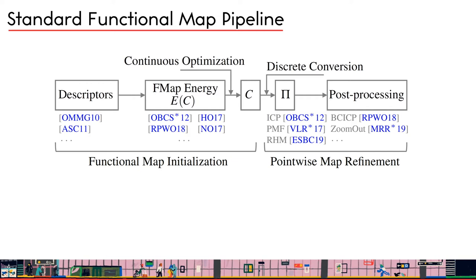Specifically, for a given shape pair, we first use existing methods to compute a few pairs of shape descriptors. We define some energy E of C based on the descriptors and other geometric constraints. A continuous solver then minimizes this energy and outputs a functional map C. We recover the point-based map pi from the functional map C by a discrete conversion step. Usually this recovered map is not of great quality, and different post-processing techniques are proposed to improve its accuracy, smoothness, or bijectivity.